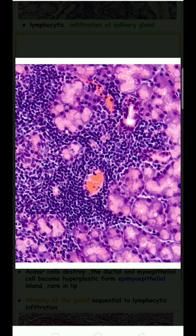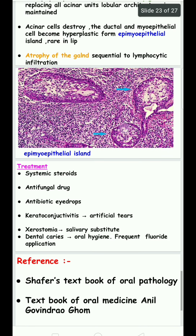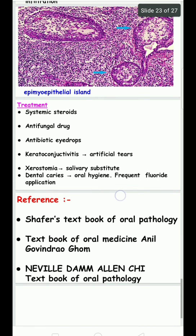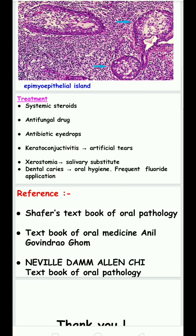Treatment includes systemic steroids, antifungal drugs, and antibiotics. For keratoconjunctivitis sicca, artificial tears are used. For xerostomia, saliva substitutes such as sugarless chewing gums and sugarless candies are used. For dental care, proper oral hygiene and frequent fluoride application are maintained, as fluoride reinforces hydroxyapatite crystals and increases resistance to dental caries.